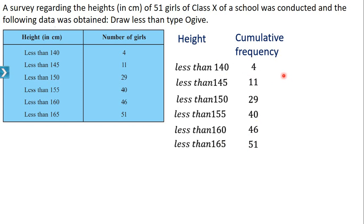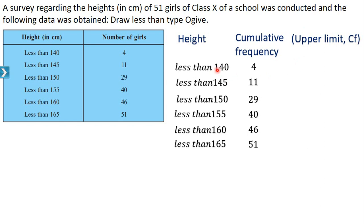Now in the graph, we are plotting upper limit versus their cumulative frequencies. Write the points to plot the graph. To plot each point, we need the pair: upper limit versus its corresponding cumulative frequency. For upper limit 140, cumulative frequency is 4. So the first point is (140, 4).